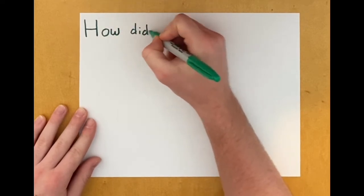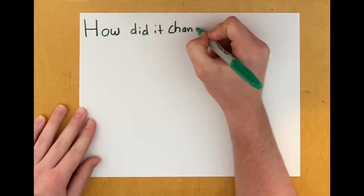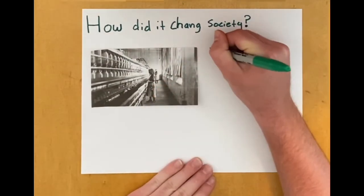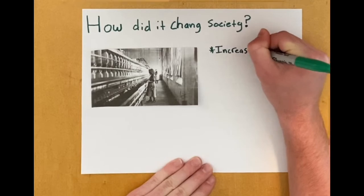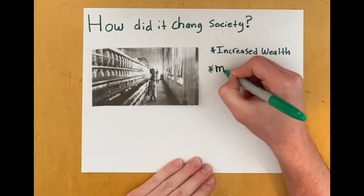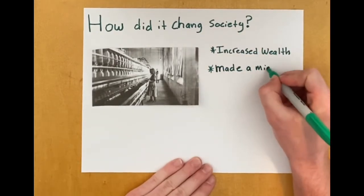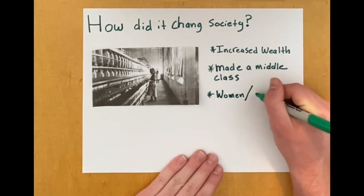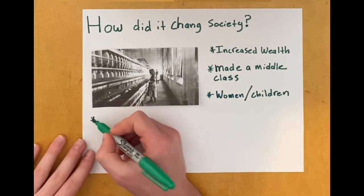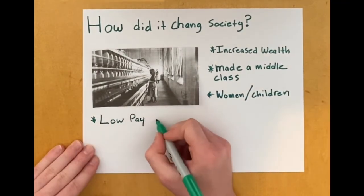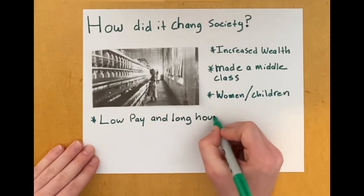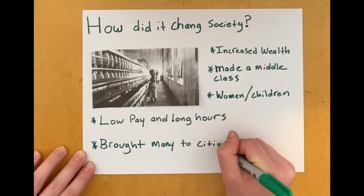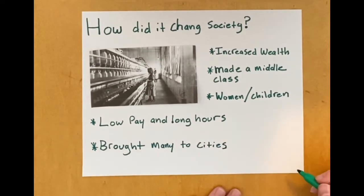So overall, how did it change society during this time period? The industrial revolution increased the wealth distributed amongst more Americans and created a middle class. However, the industrial revolution often made large numbers of women and children work during tedious and dangerous shifts, and they were often paid very low wages. The industrial revolution also brought many people into the cities for work.